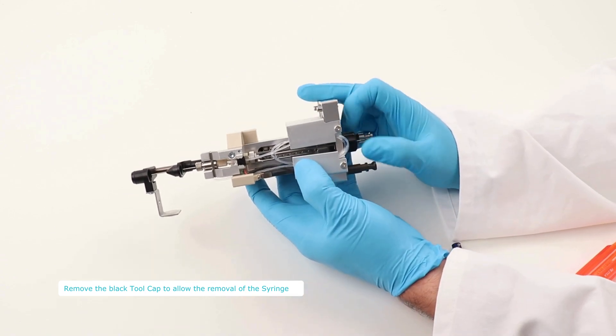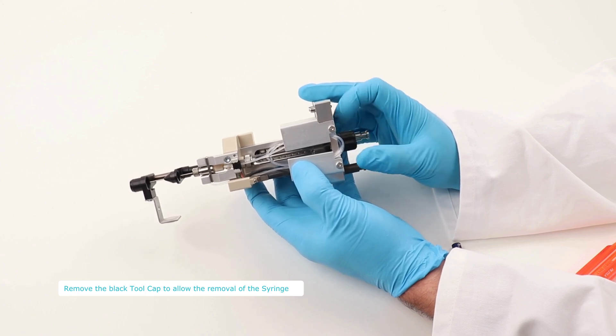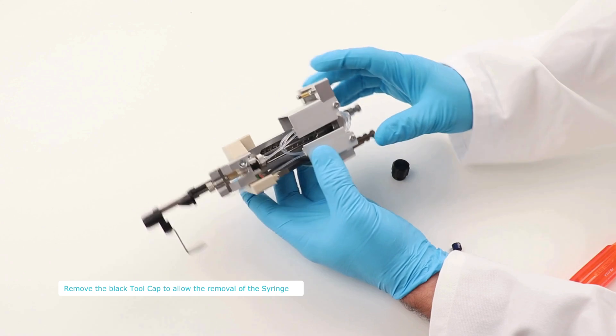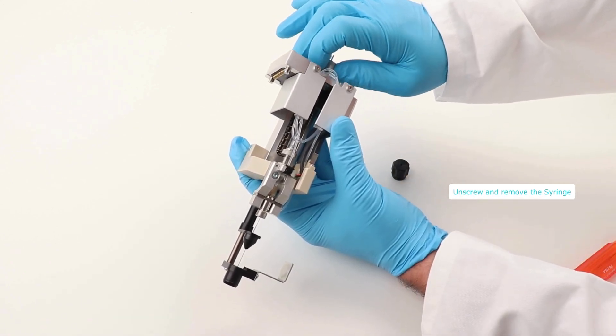Proceed to remove the black LC-MS cap to facilitate the removal of the syringe. Unscrew the entire syringe and gently extract it from the tool.